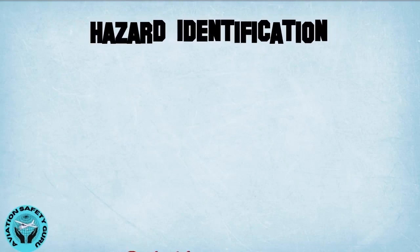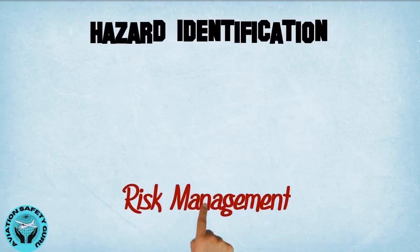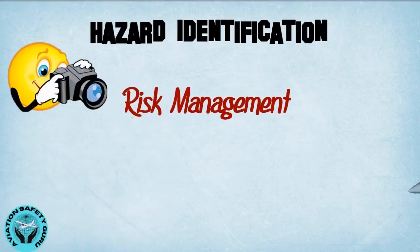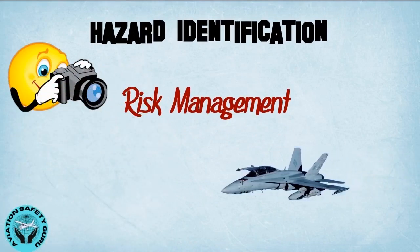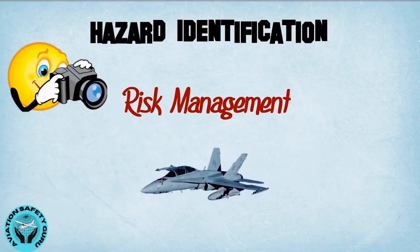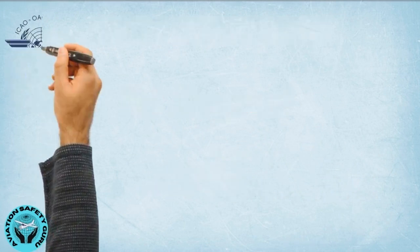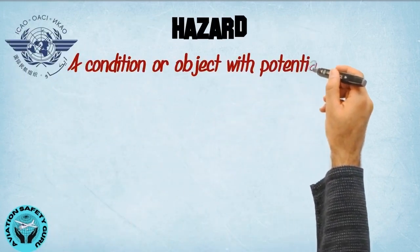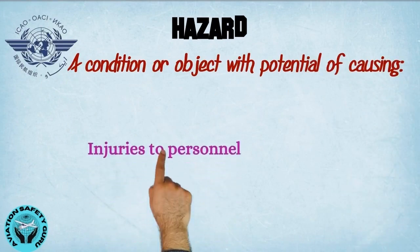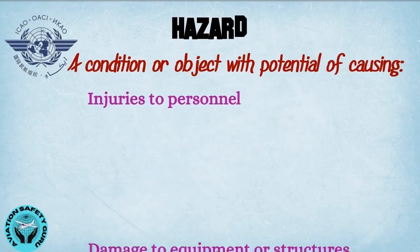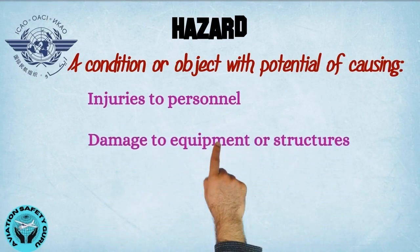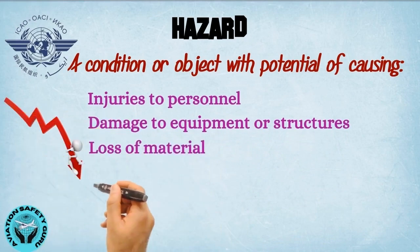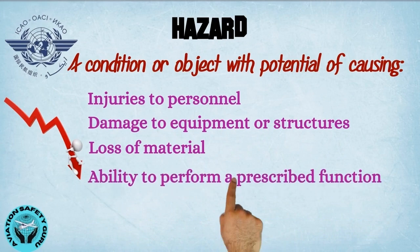Hazard identification is the basis of risk management. In this video, we will learn about the basics of hazard identification in aviation. ICAO has defined hazard as a condition or object with the potential of causing injuries to personnel, damage to equipment or structures, loss of material, or reduction of ability to perform a prescribed function.